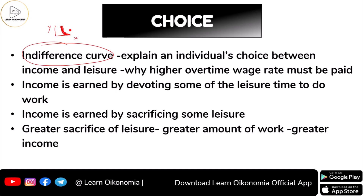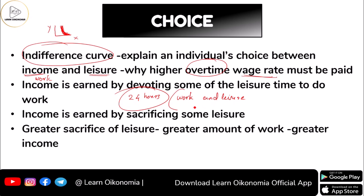Here we are making a choice between two things: income and leisure. How do you get income? If you go for work, you will be getting income. We have to work with the 24-hour constraint — everybody gets only 24 hours, and we have to divide these 24 hours between work and leisure. You can earn income by going for work, and when you go for work you are actually sacrificing some of your leisure.